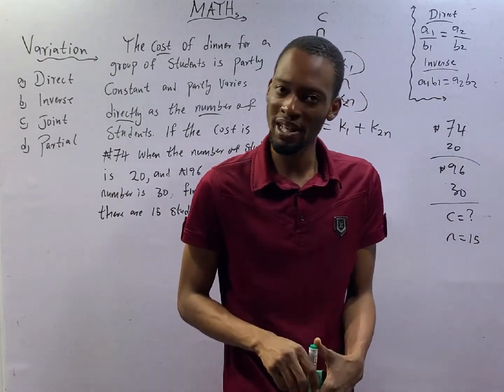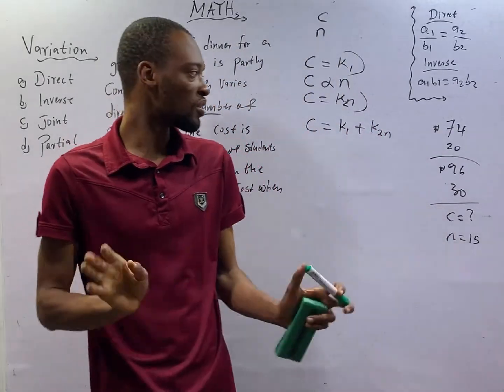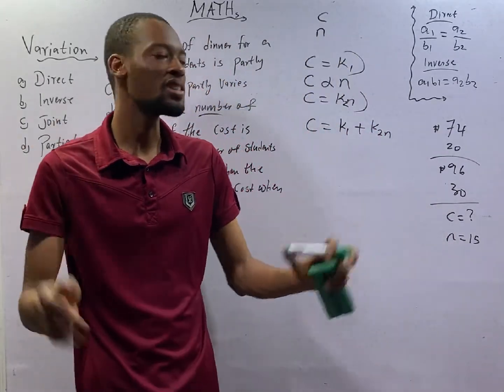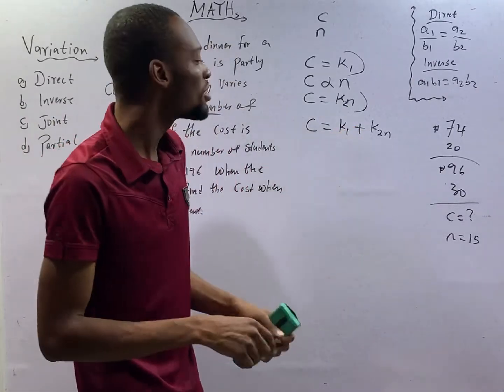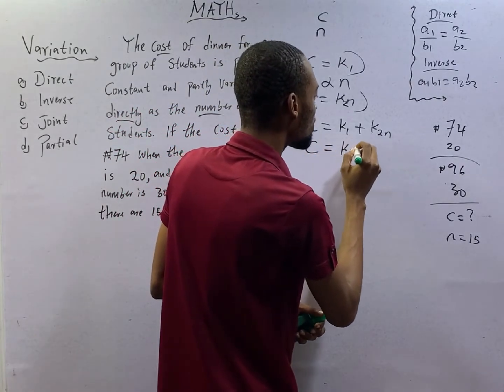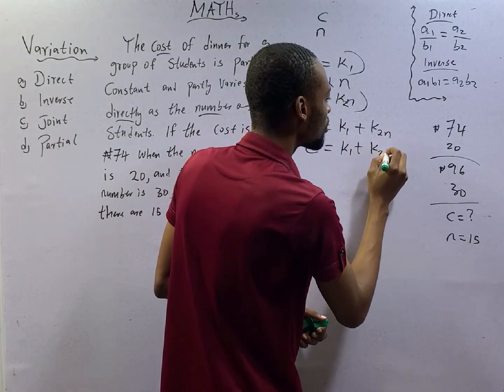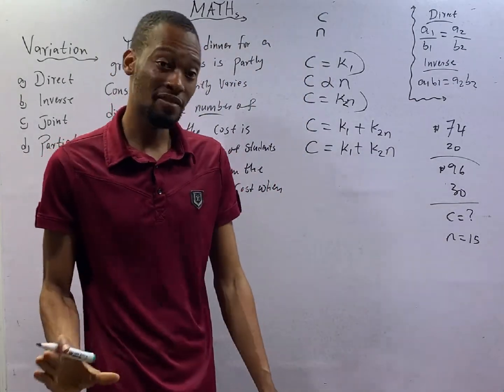Ladies and gentlemen, partial variation will always lead to simultaneous equation. No two ways about it. Anytime you see partial variation, after doing something like this, you have to do another one. C equals K1 plus K2N. You must do it. That is partial variation for you.